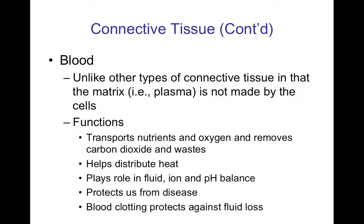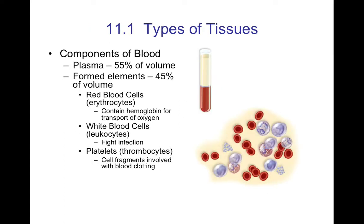Connective tissue also involves the blood. Blood has mainly a liquid component — the plasma — and then the formed elements, which would be your red cells, white cells, and platelets. Blood is responsible for transporting nutrients and oxygen, getting rid of waste, distributing heat, maintaining pH balance, fighting disease, and preventing fluid loss — as in the case of platelets.